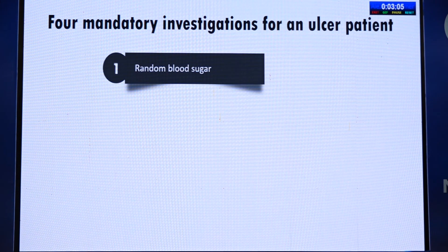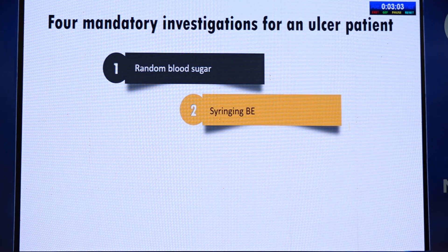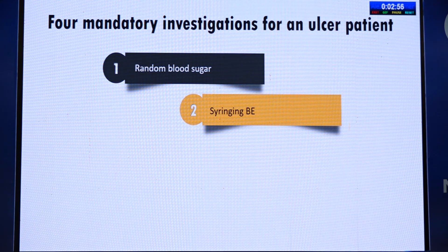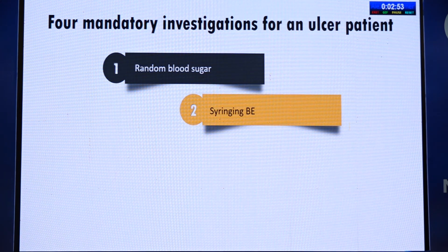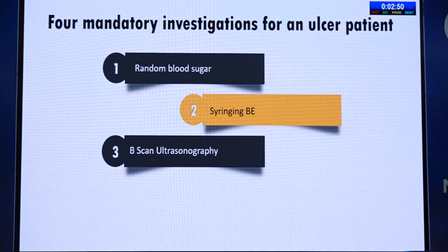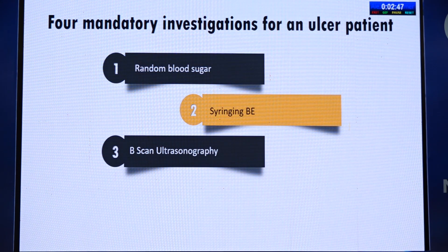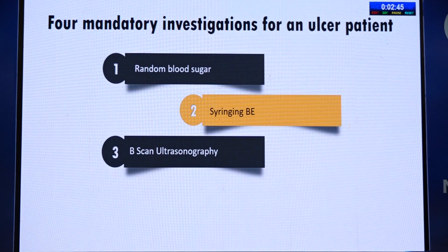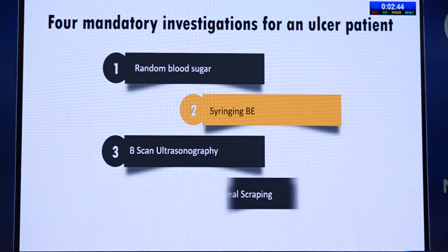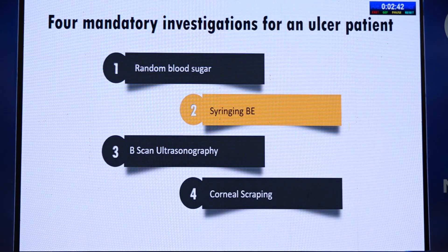Mandatory investigations include a random blood sugar to rule out uncontrolled or early diabetes; syringing to check patency of the sac, especially in GPC ulcers where the sac can be the source of infection; B-scan ultrasonography whenever you cannot see the fundus to rule out posterior segment involvement; and corneal scraping, which is mandatory.